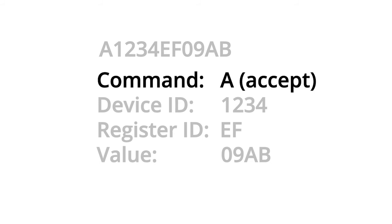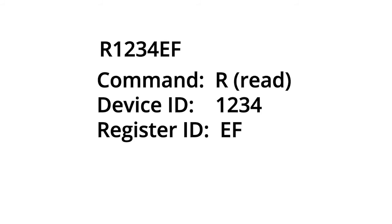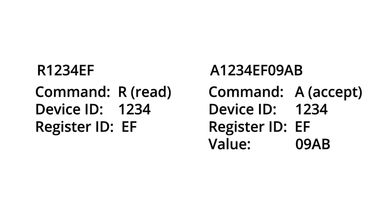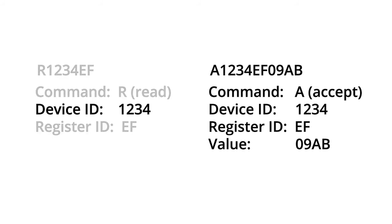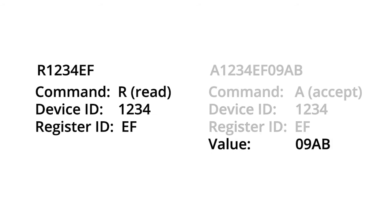The A means I accept your write to device 1234, register EF, and value 09AB. Then a client could read back the value by opening up a socket to the server and sending R1234EF, which would make the server respond with A1234EF09AB. In this case, the R means read, the 1234 means device ID 1234, the EF means register EF. The server's response of A means accepted — 1234 means device 1234, the EF means register EF, and the 09AB is the value that we previously wrote into that register.